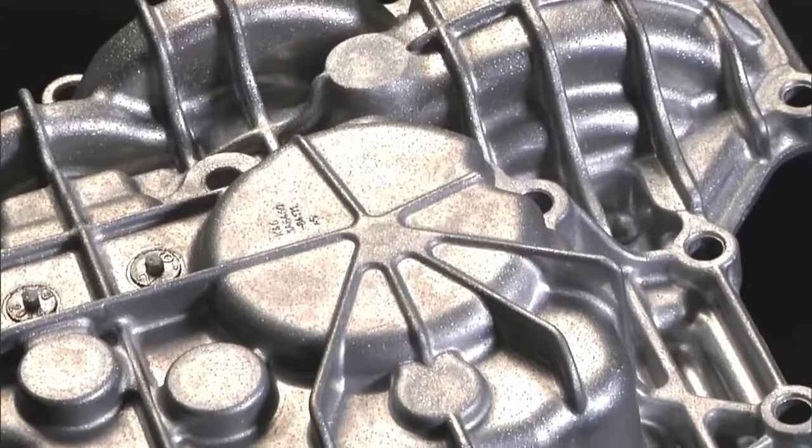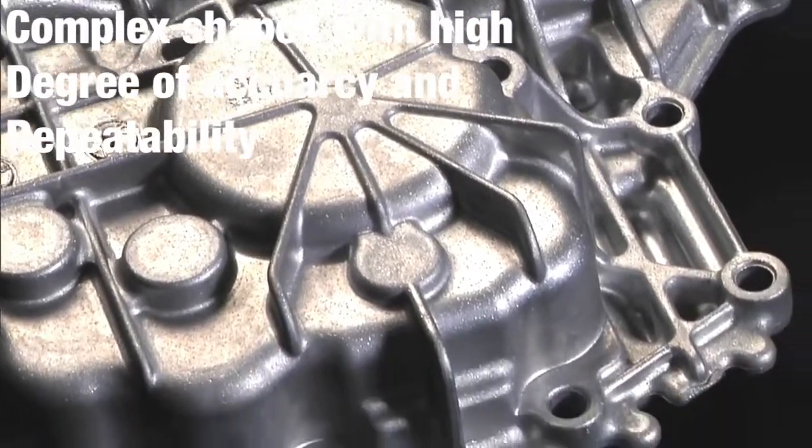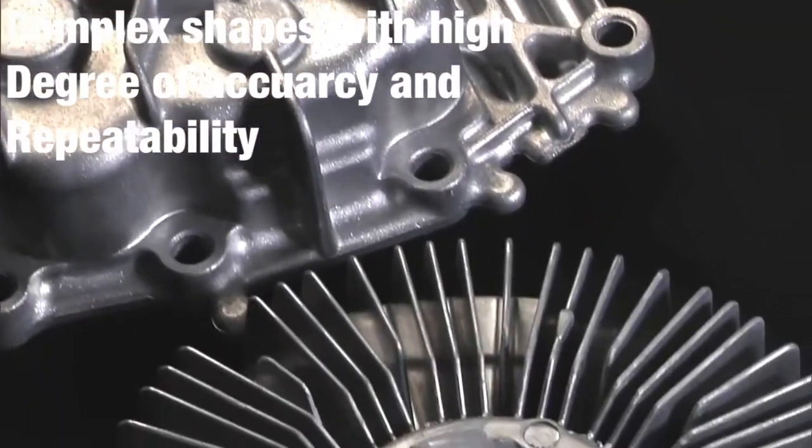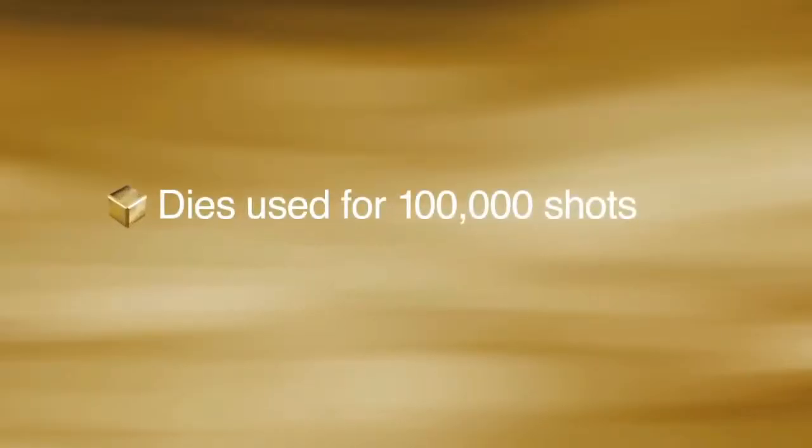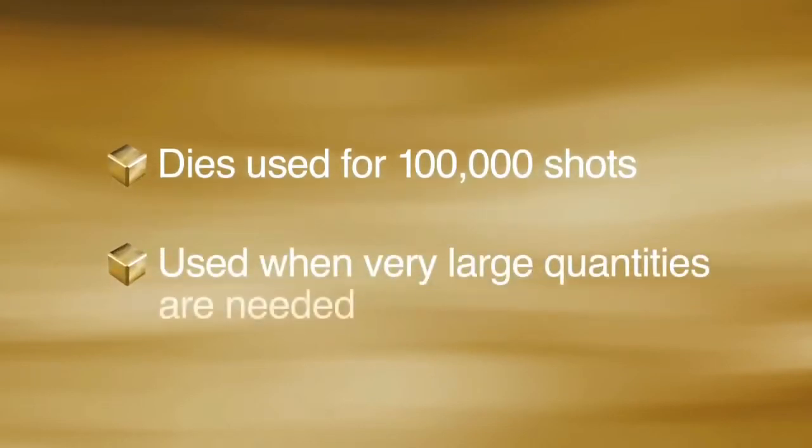As technology advances and computerized automation in the field increases, we will be seeing even more light metal components in the future. These dies can be engineered to produce complex shapes with a high degree of accuracy and repeatability. Dies can be used many thousands of times, so the die casting process is used when very large quantities are needed.